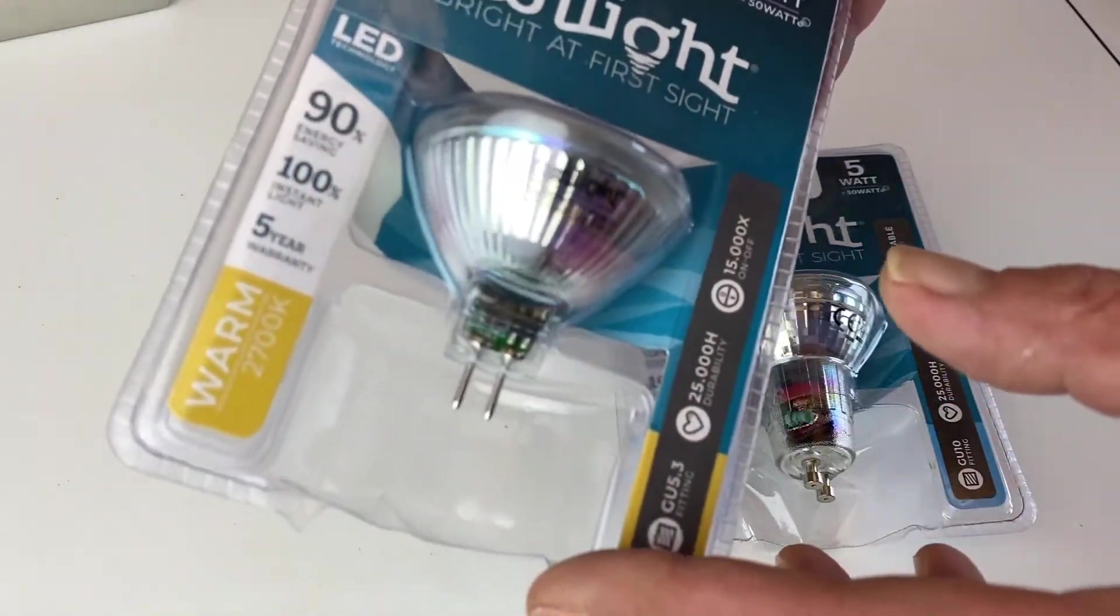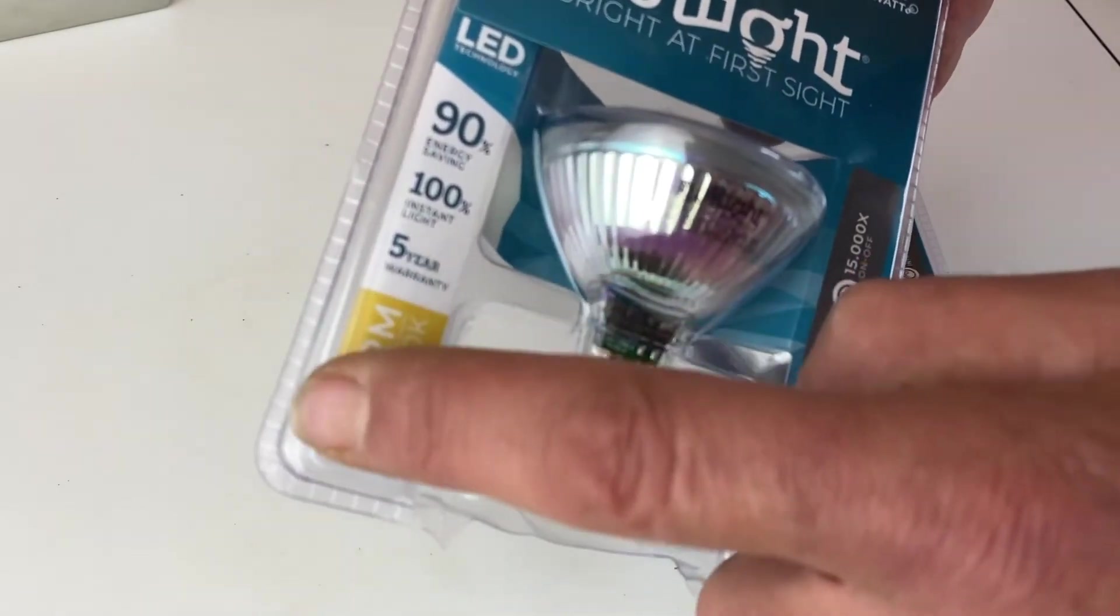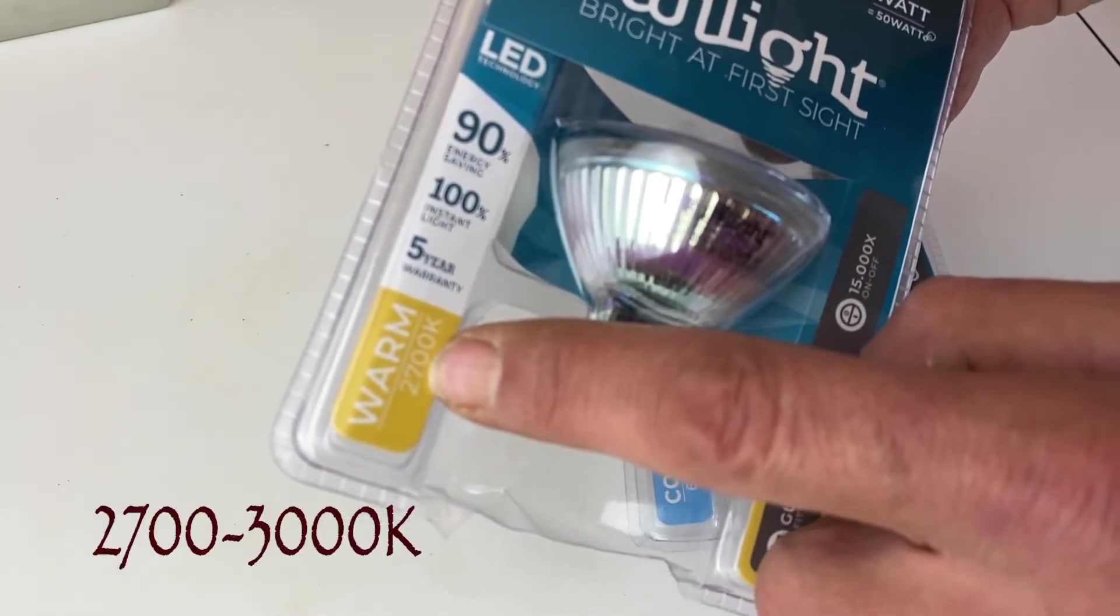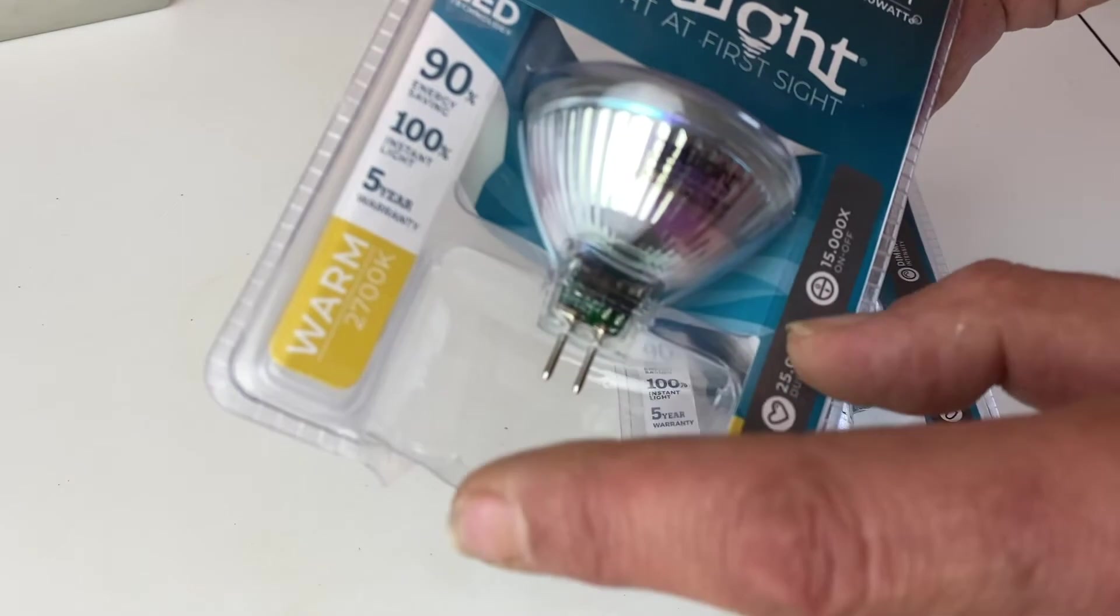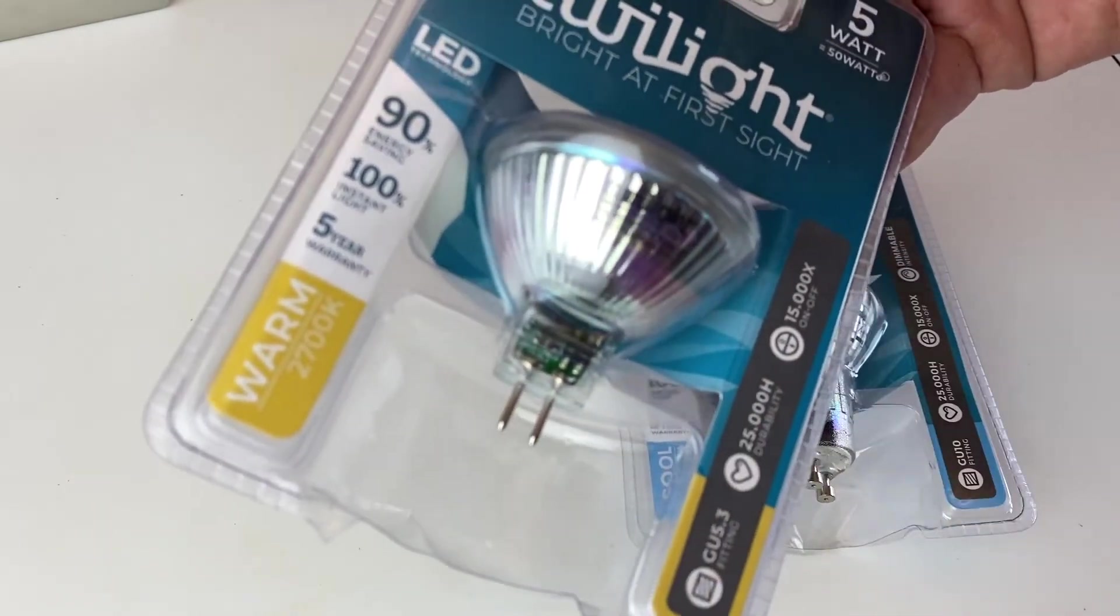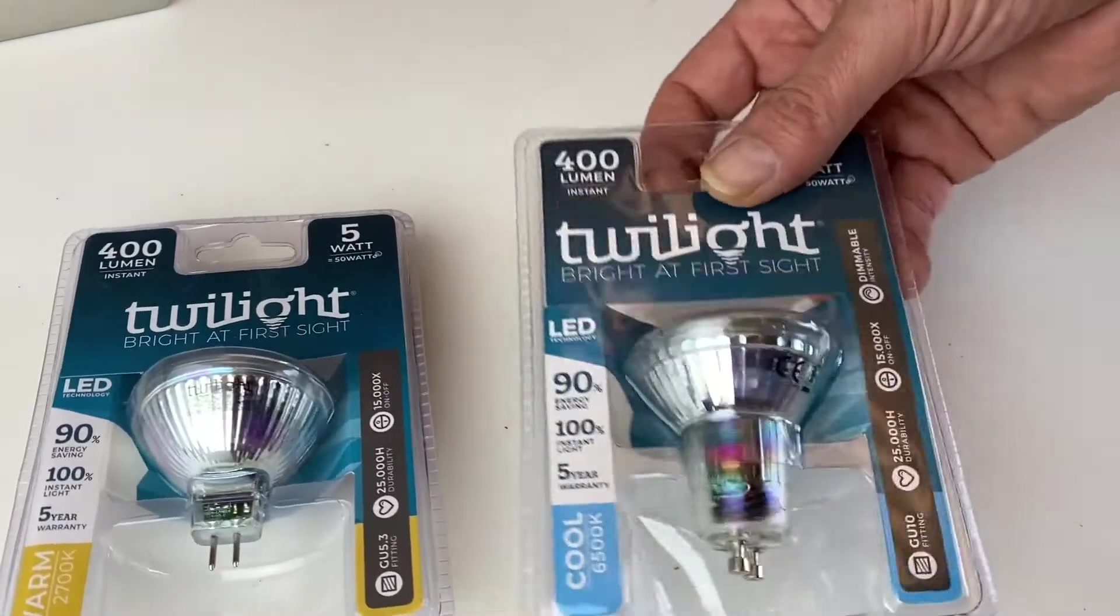Here this is another model which was provided with the normal spotlights, not for wet rooms. So quite important, you have here different types of bulbs. You see here this one is saying warm, which means that it will provide a yellowish light.